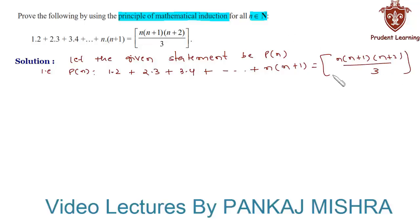Now let's check whether the given equation holds true for n equals 1. For n equals 1, we have P(1) on the left hand side as 1·2, that is 2 itself, whereas on the right hand side we have P(1) equals 1(1+1)(1+2)/3. These two 3s get cancelled with each other and we are left with 1·2 which is equal to 2. So we have P(1) as 2 for both LHS and RHS, and therefore P(1) is true for the given statement.